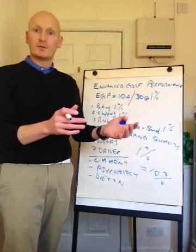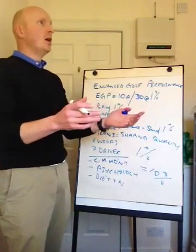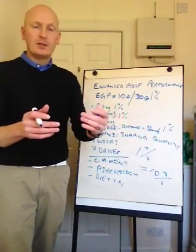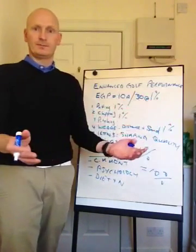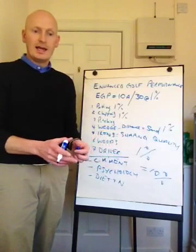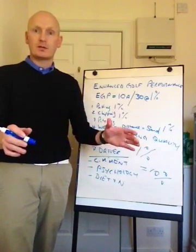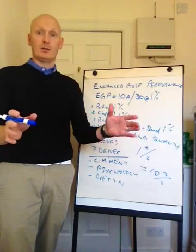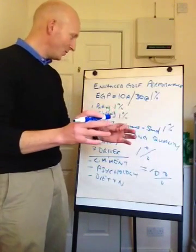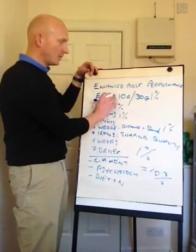Then we go to course management, for example. Just a little thing like, when you tee the ball up, whereabouts do you tee it up? Tee it up nearer the hazard and hit away from the hazard. There we go, 1% better. Diet and nutrition, let's simply cut out biscuits for 30 days. I guarantee that I'll be more than 1%. So if I've got 1% from each of my 10 aspects.